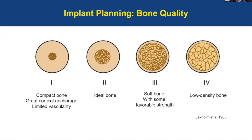Type 3 and Type 4 are considered soft bone. Type 3 has a little more trabecular strength compared to Type 4, which has very low density bone — not only a very thin layer of cortical bone, but also very coarse cancellous or trabecular bone. This is not very good bone for an implant.